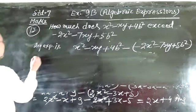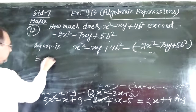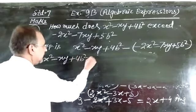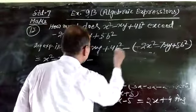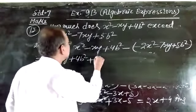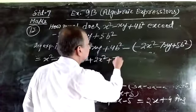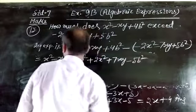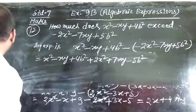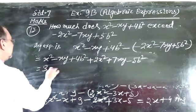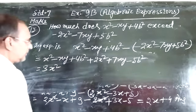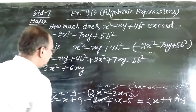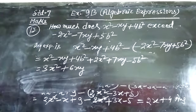This is equal to x square minus xy plus 4y square. Here minus sign, sign change, plus 2x square plus 7xy minus 5y square. So we have x square and 2x square, here we have now 3x square. Minus xy plus 7xy, here we have now 6xy.